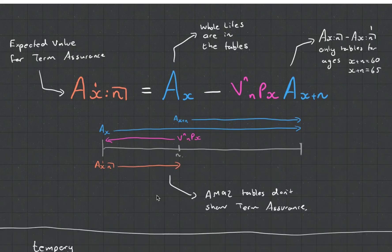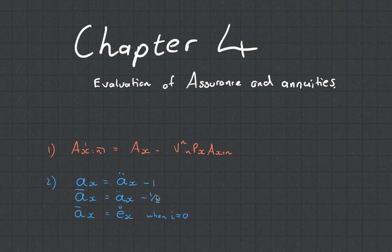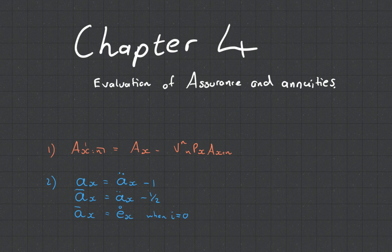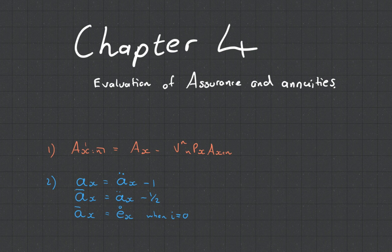With that, that is chapter four for CT5, the evaluation of assurance and annuities. Thanks so much. And feel free to leave your comments in the comment section below and subscribe as I am in the process of making chapter five, six, seven, eight and nine videos. So those will be being released soon. Thanks guys. Cheers.